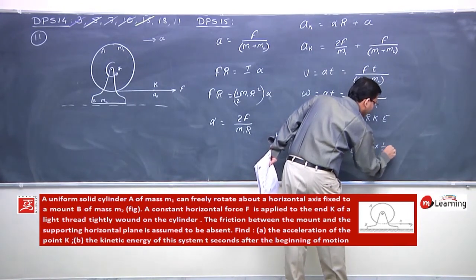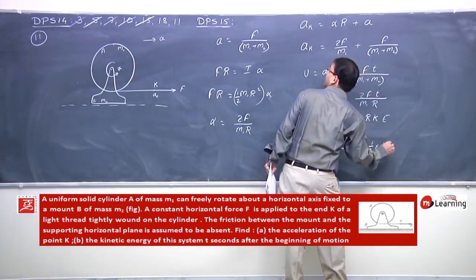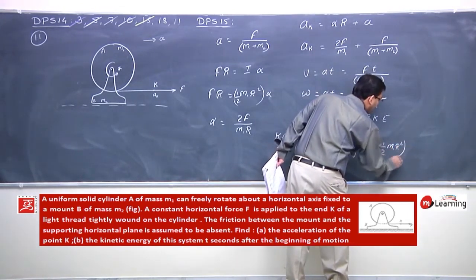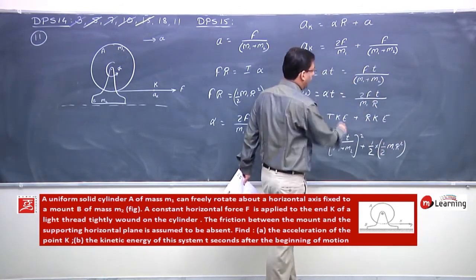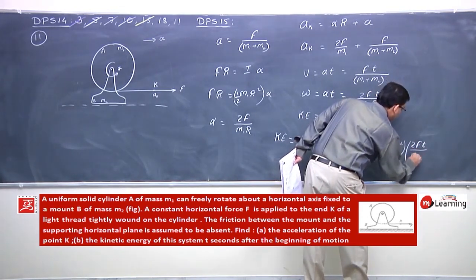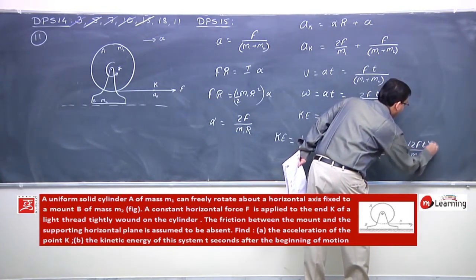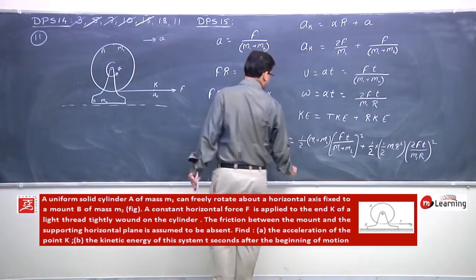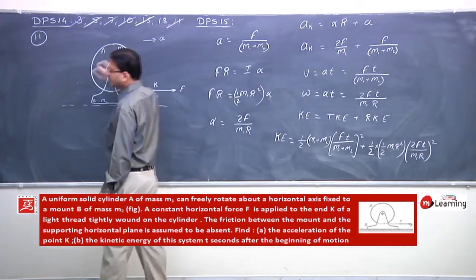Half I omega square. So half, where I is half M1 R square, into omega square, which is 2F T by M1 whole squared. This is the total kinetic energy of the system.